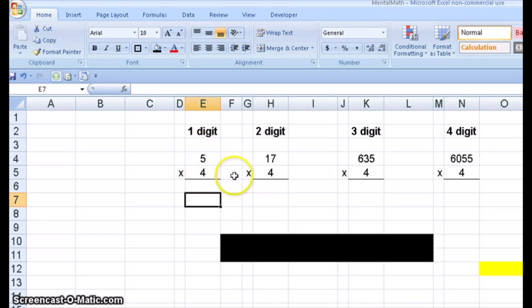So let's just do these. Five times four is 20, that's pretty easy. 17 times four is 68. 635 times four is 2,540. And 6,055 times four is 24,220. I just did all those in my head really fast. Of course, this one's trivial. One digit's trivial.